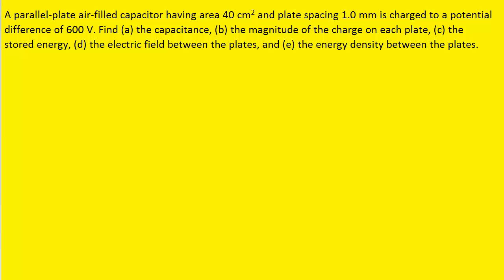For part A, in order to find the capacitance, we can refer to the following equation. According to the equation, the capacitance will equal a constant multiplied by the area of one of the plates, divided by the distance that separates the plates. Now, the question notes the area in centimeters squared, as well as the separation between the plates in millimeters. We need to convert those values into their standard units, so let's do that first.